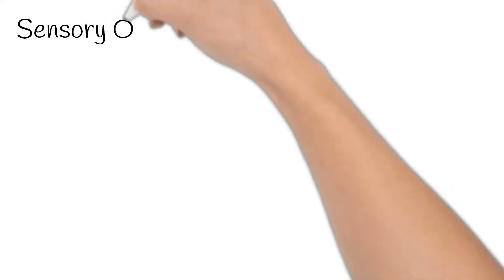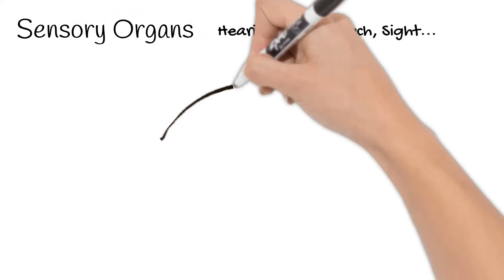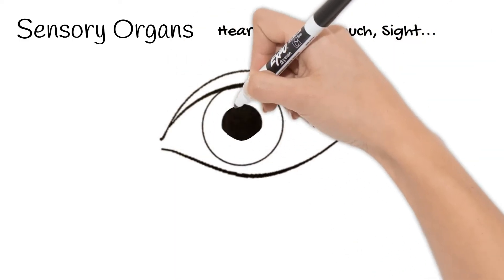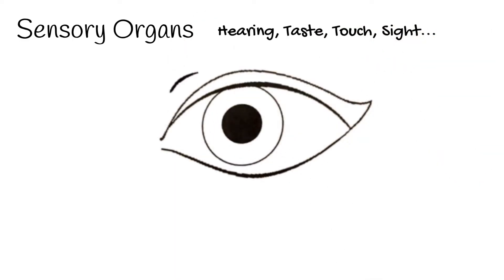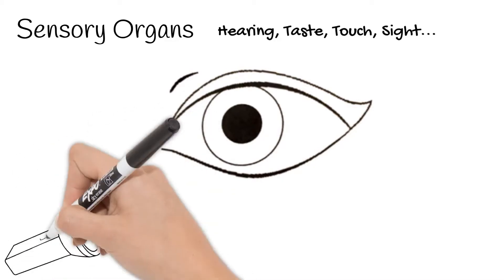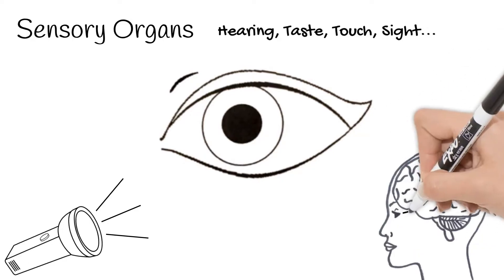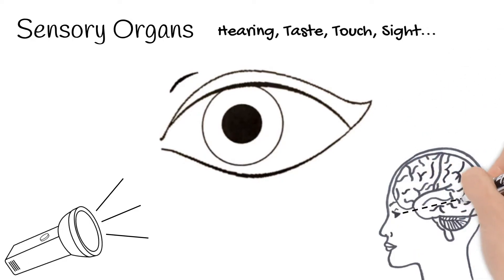Sensory organs give us so much information every day. One of these sense organs is the eye, and it is one of the most complex parts of your body. The eye is stimulated by light and is able to focus on objects, sending the images to your brain to process. In this video, we'll look at the specific parts of the eye and their functions.